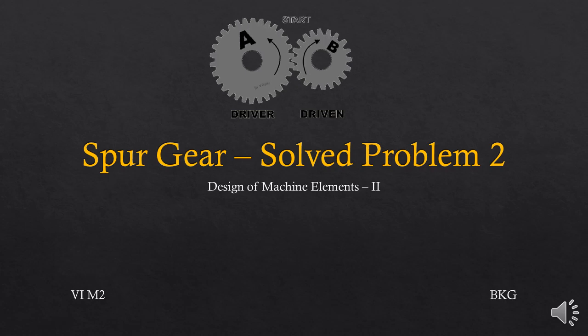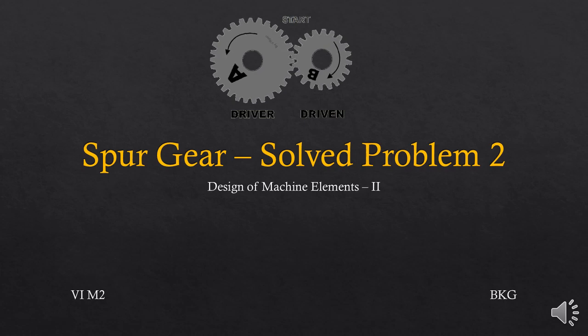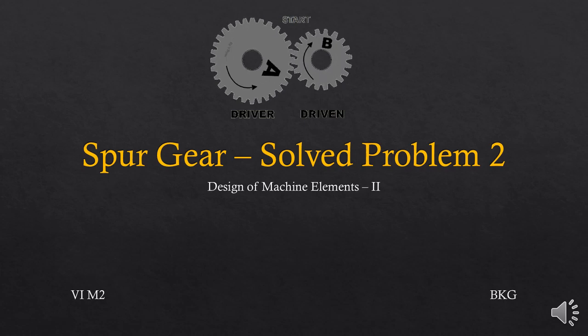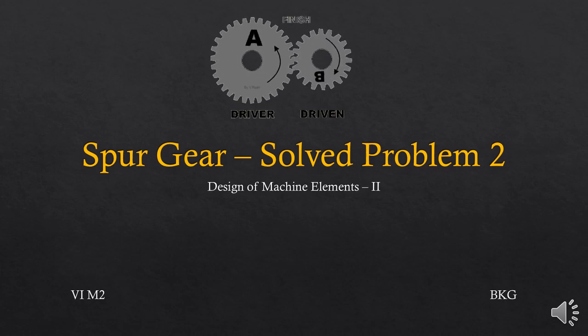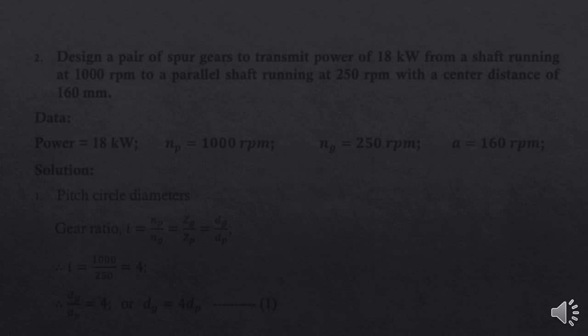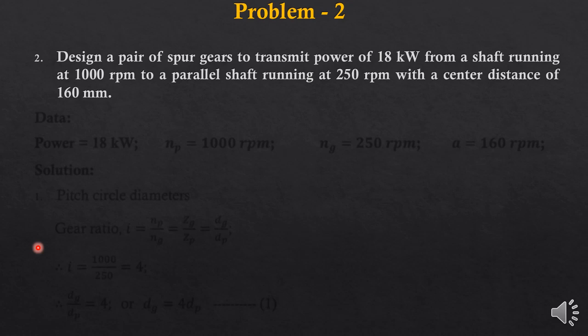Hello students. In this video we will look into one more solved problem on design of spur gears. Problem number 2. Design a pair of spur gears to transmit power of 18 kW from a shaft running at 1000 rpm to a parallel shaft running at 250 rpm with a center distance of 160 mm.